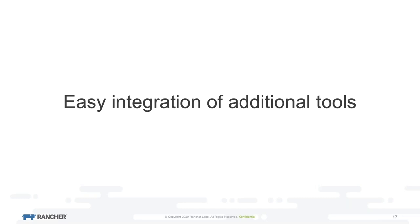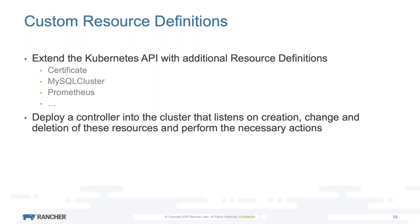You can extend the Kubernetes API by creating custom resource definitions (CRDs). A CRD is a Kubernetes API object that, when created, extends the API to understand additional resource types — for example, a certificate, a MySQL cluster, or a Prometheus instance. Once Kubernetes understands these resource types, you can deploy additional controllers — pods that just listen against the Kubernetes API on the creation, change, updates, and deletion of these resource types and perform the necessary actions.